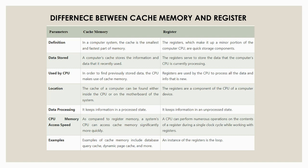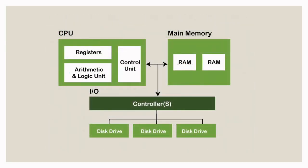CPU memory access speed of cache memory: as compared to register memory, a system CPU can access cache memory significantly more quickly. CPU memory access speed of register: a CPU can perform numerous operations on the contents of a register during a single clock cycle. Examples of cache memory include database query cache, dynamic page cache, and more. An example of a register is the loop. In this figure, the CPU consists of registers, arithmetic and logic unit, and control unit. The main memory consists of RAM, and input-output consists of controllers and disk drives.